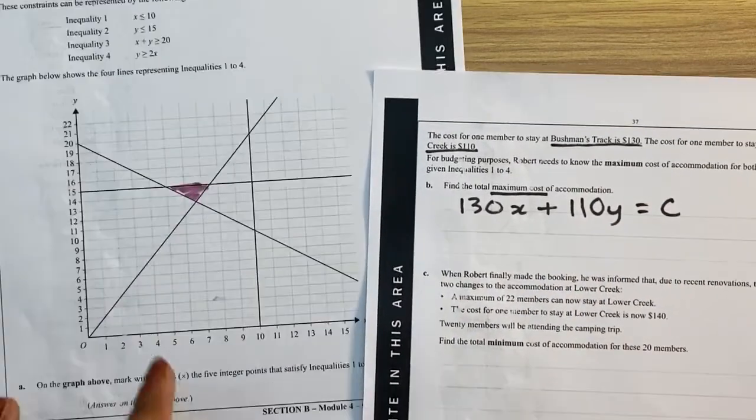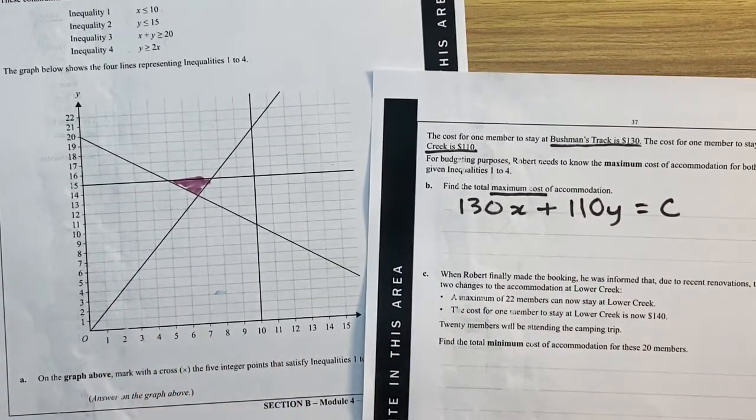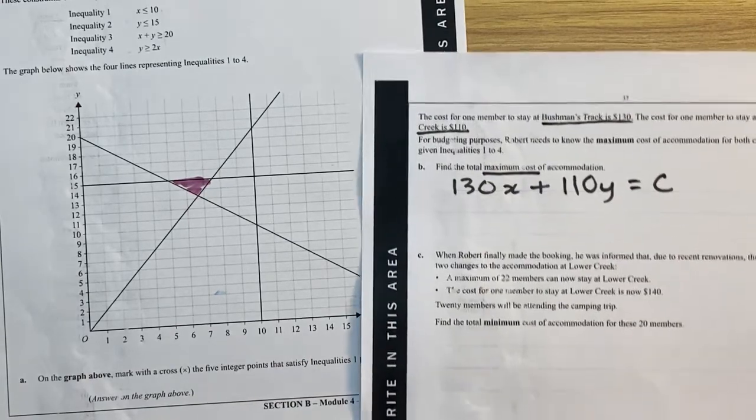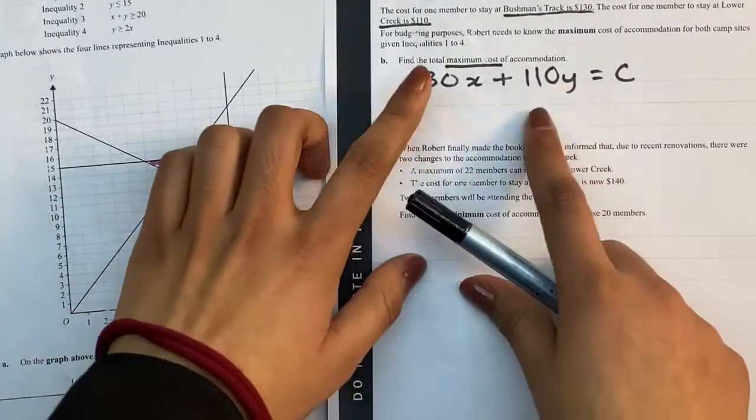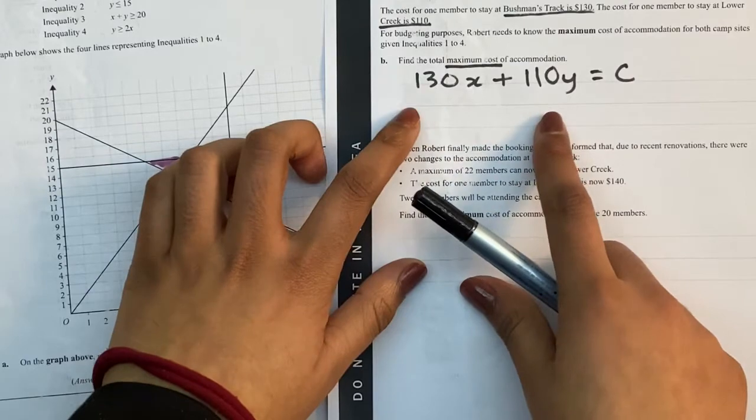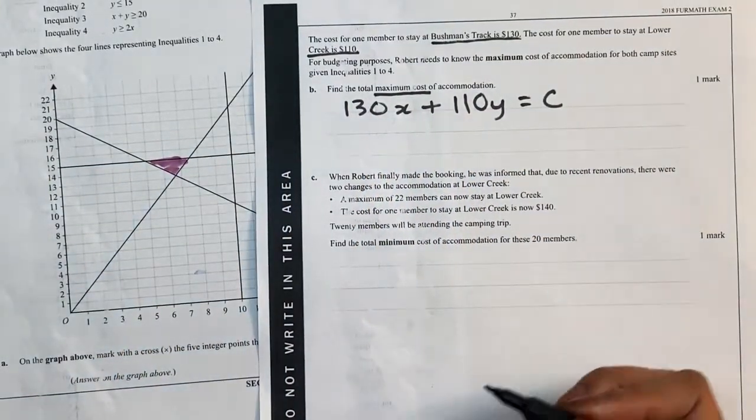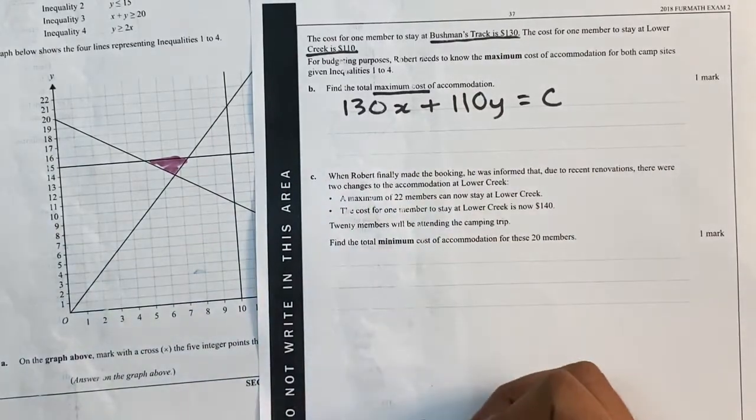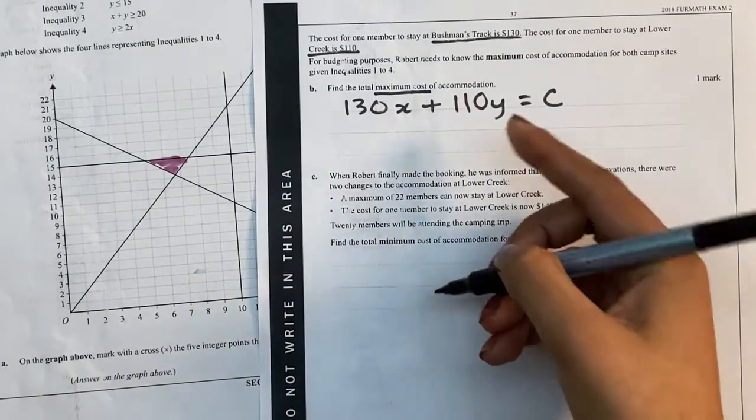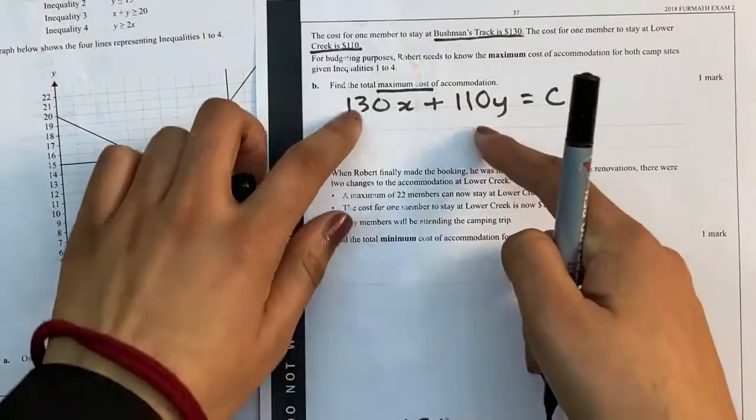Now remember what I said about the easy way to plot a line is by switching the axis. So we're going to do that. So on our working out, we can just write the axis intercepts for this. We're just going to switch it. So that means y will equal to 130, and x will equal to 110. So just switch the coefficients.